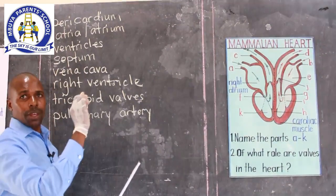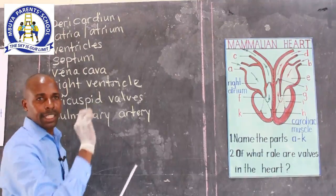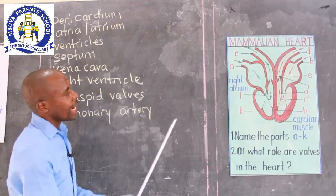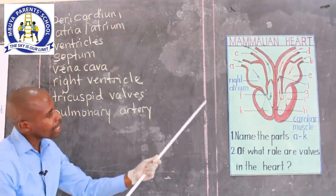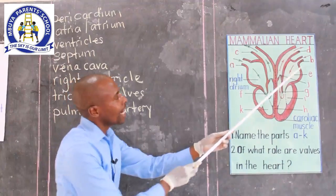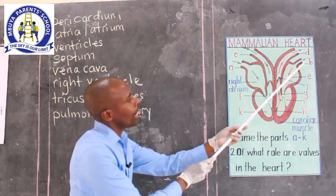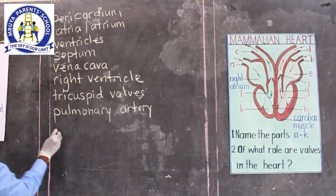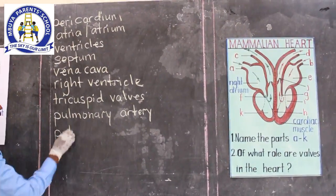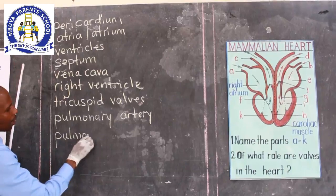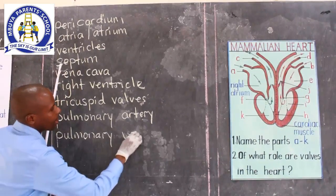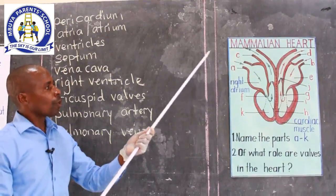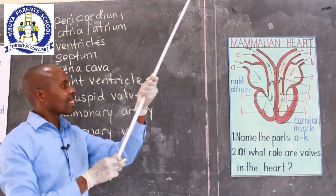Blood goes to the lungs to be oxygenated. It drops its carbon dioxide and picks up more oxygen. Now blood is coming back to the heart, using blood vessel marked B, which is the pulmonary vein. It brings blood from the lungs back to the heart.